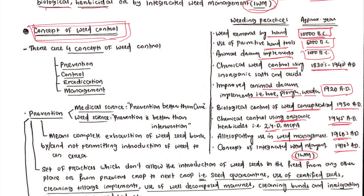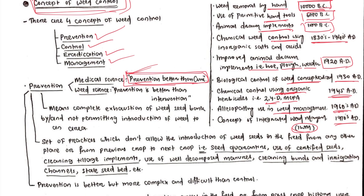There are basically four concepts of weed control: prevention, control, eradication, and management. What do you understand by prevention? Generally in medical science we say prevention is better than cure — because if you have prevented the disease or prevented the pathogen or insects from infesting us, then we do not need to control it. Once the disease is dominating and multiplying in our body, it is very difficult to control. So prevention is always better than cure; you should take care of yourself to prevent the entry of different pathogens.